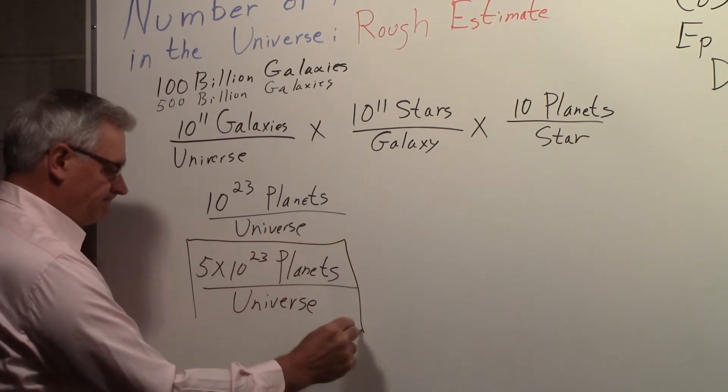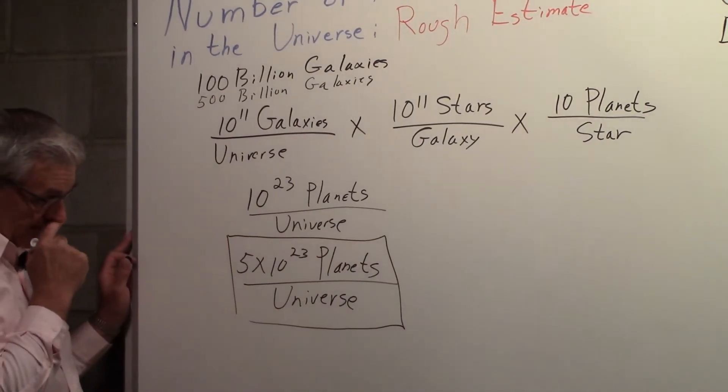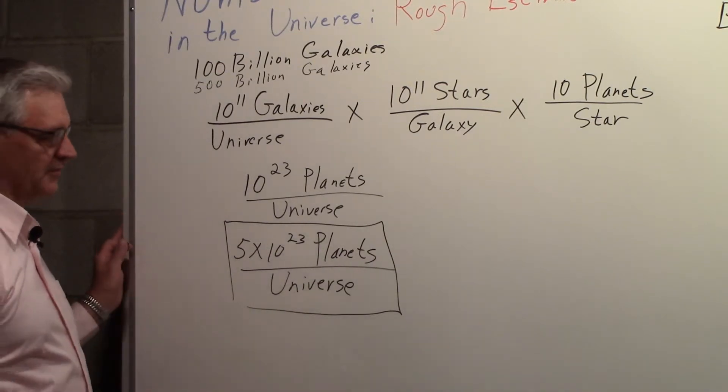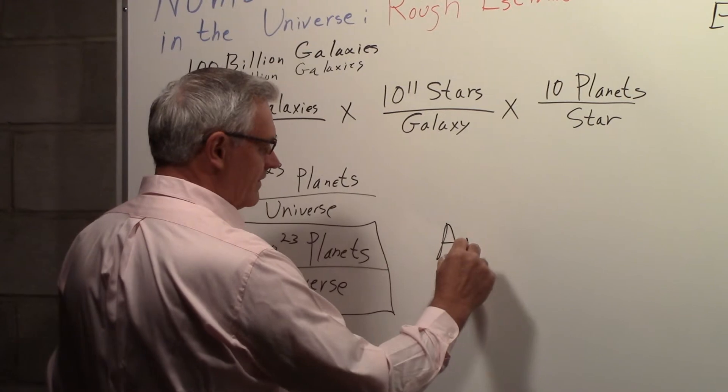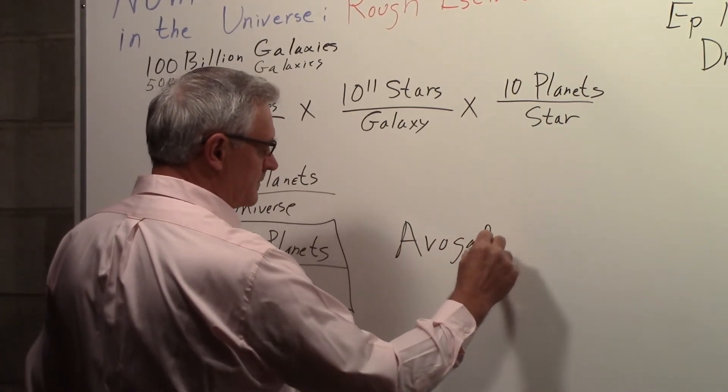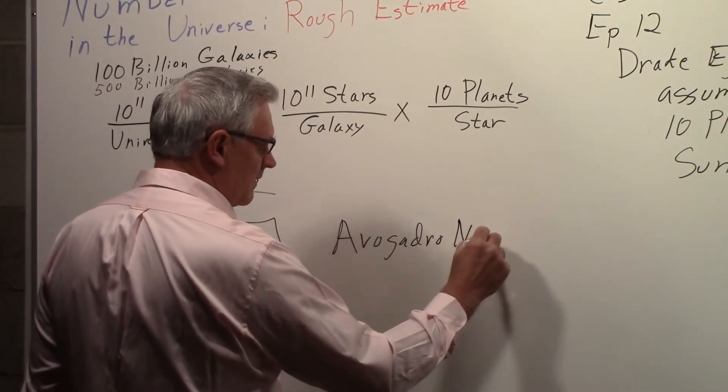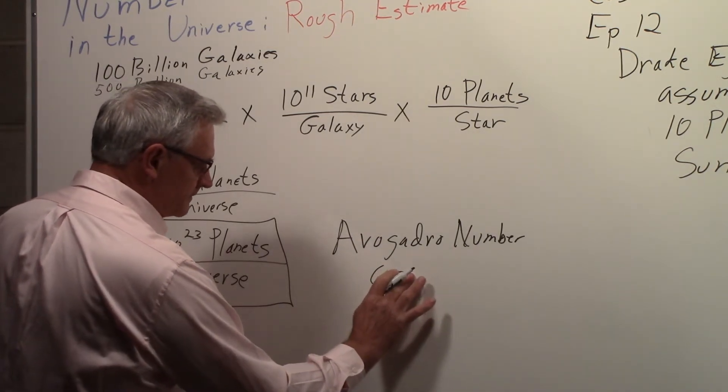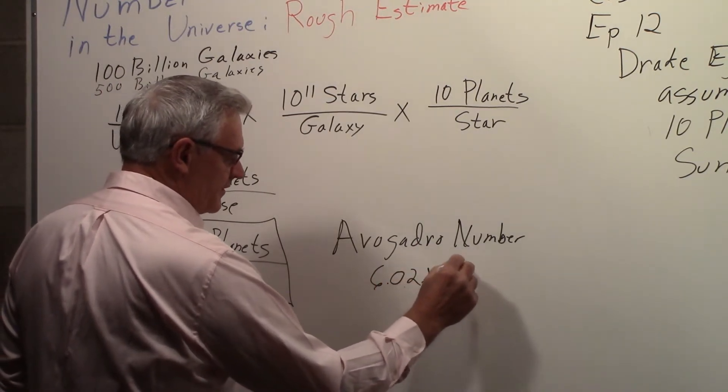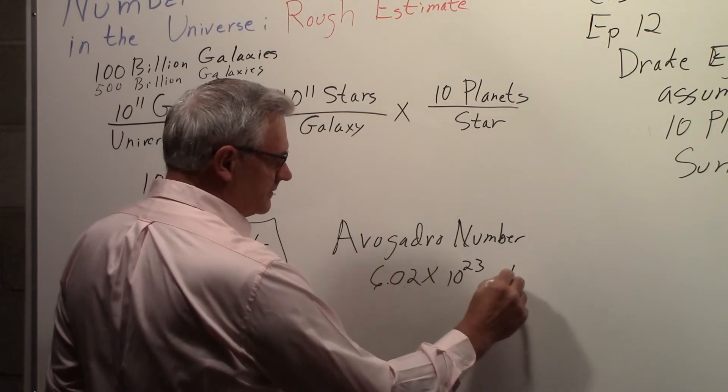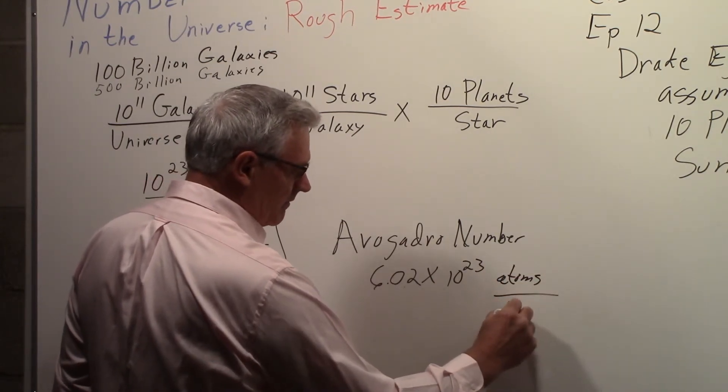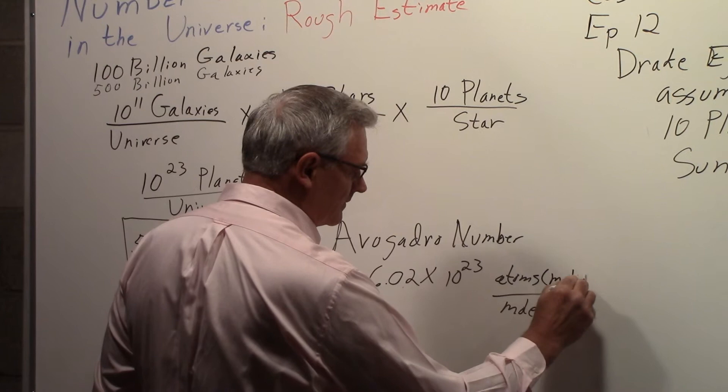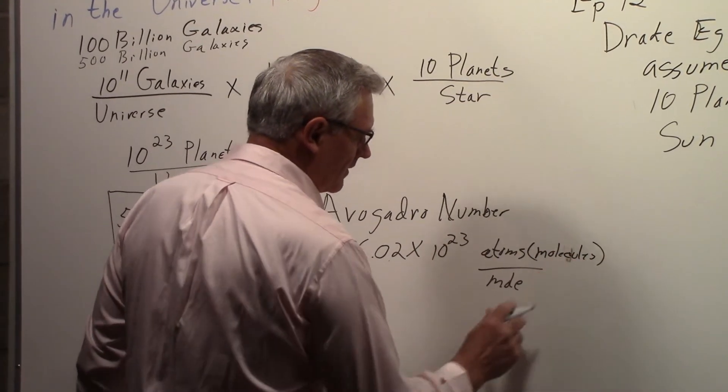So that's a rough estimate. Five times ten to the twenty-three planets per universe. What is really interesting about that number is it's very close to Avogadro's number. The Avogadro number, which is 6.02 times ten to the twenty-third, atoms per mole or molecules per mole or particles per mole.